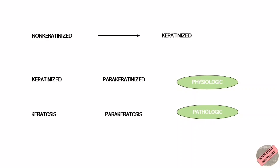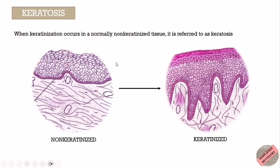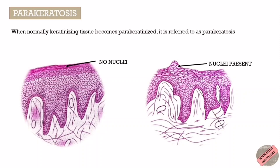When keratinization occurs in a normally non-keratinized tissue, it is referred to as keratosis. When a normally keratinizing tissue such as the epidermis becomes parakeratinized, it is referred to as parakeratosis. Parakeratosis is a mode of keratinization characterized by the retention of nuclei in the stratum corneum. That was all about non-keratinized epithelium of oral mucosa.